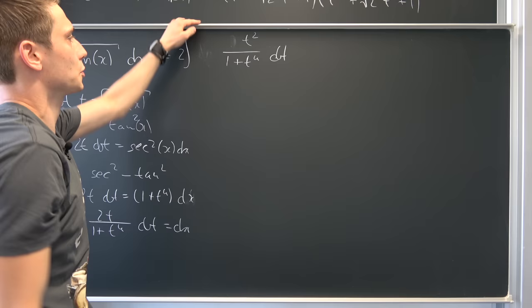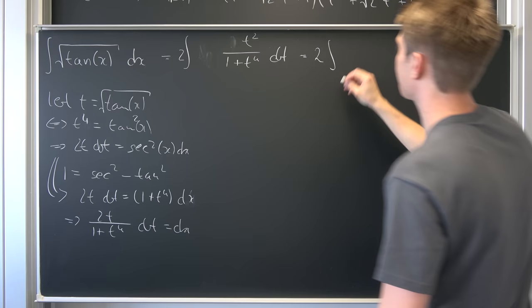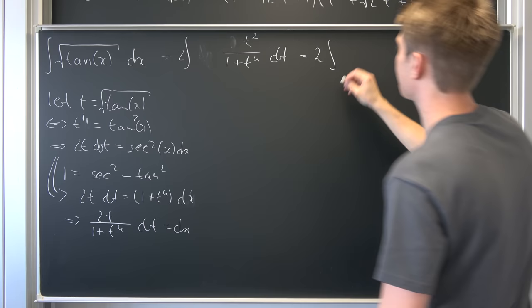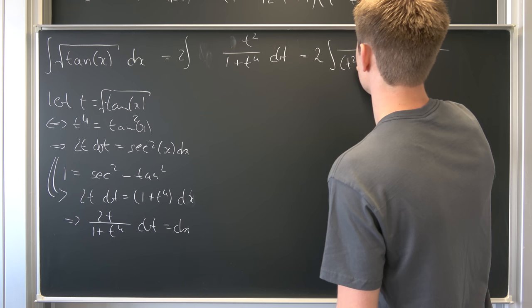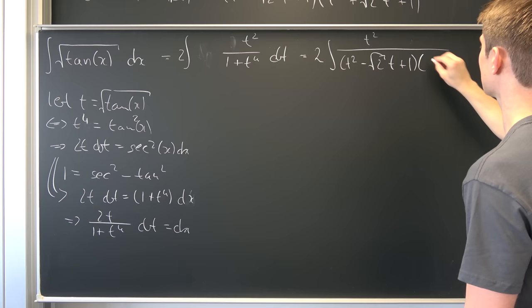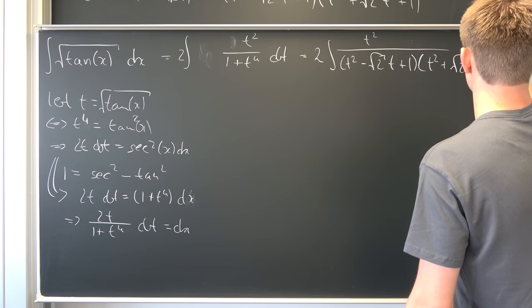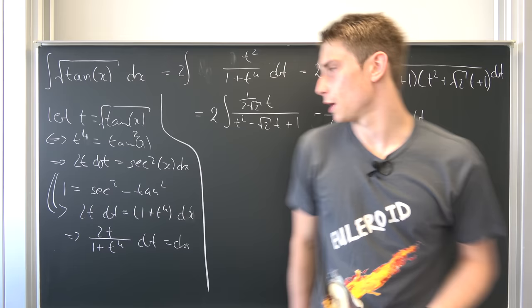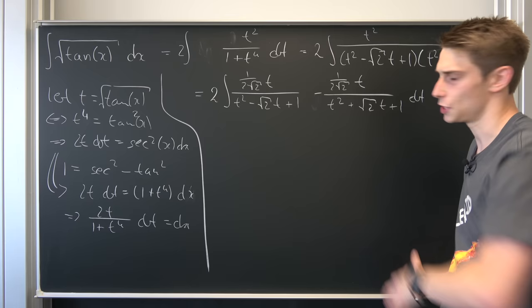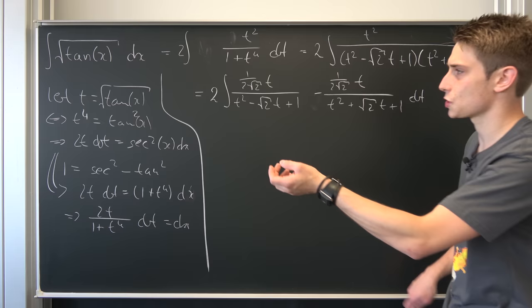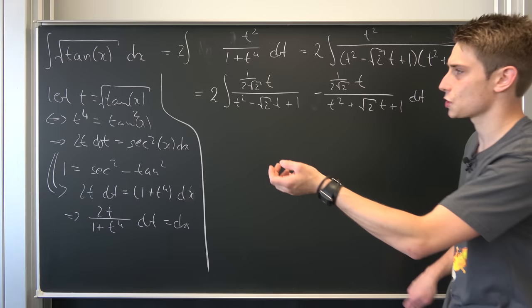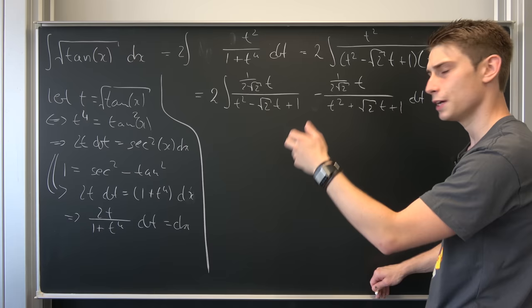That was quite easy actually. Now we can plug this into the integral. So now we have 2 times the integral of t squared over t squared minus square root of 2 times t plus 1, times t squared plus square root of 2 times t plus 1, integrated with respect to t. And for those partial fractions — as you can see if you watched the outtakes — I tested partial fraction decomposition right here. What's obvious now is that we can use linearity to split this up into 2 integrals because they are additive, and also we can bring this common factor out: 1 over 2 times square root of 2.